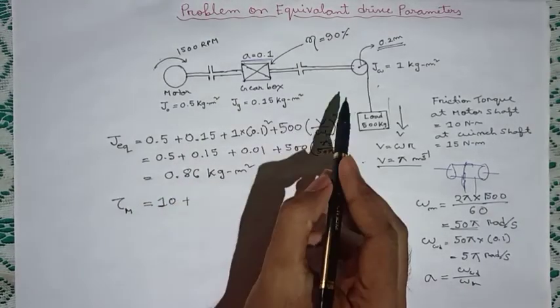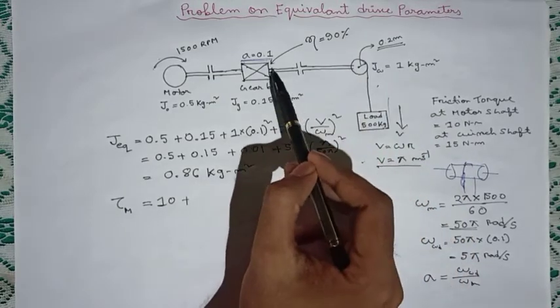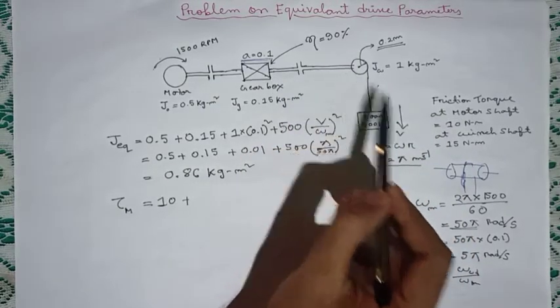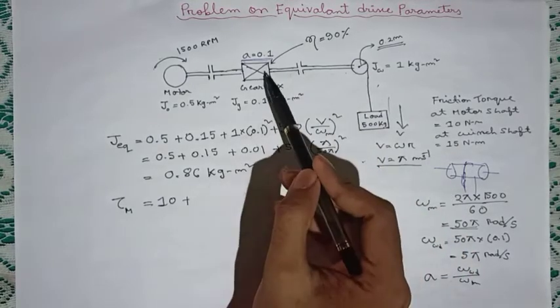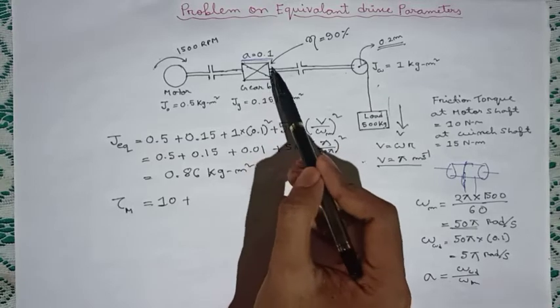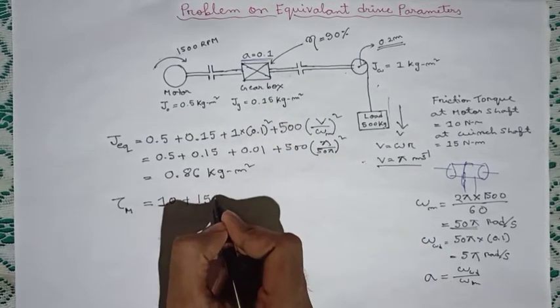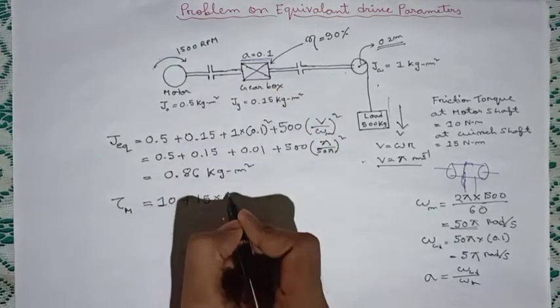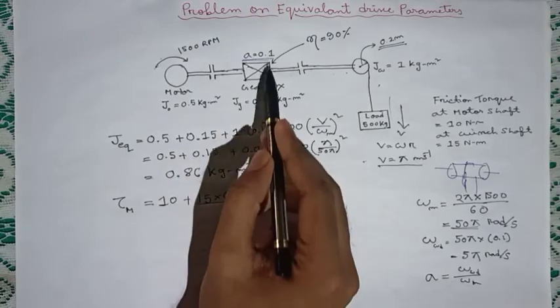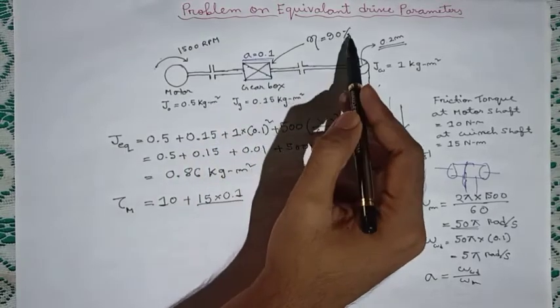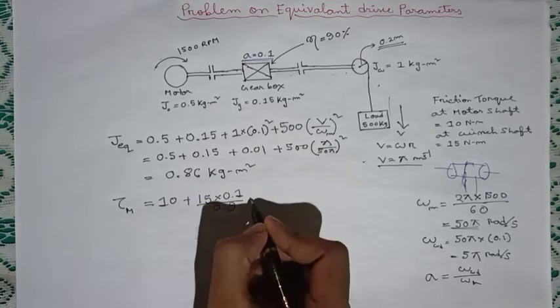Now the friction torque at the wind shaft, that is here, it is given as 15, but we cannot directly write it here. It is because this is connected through a gear. So we have to write 15 into the gear ratio, that is 0.1, and the efficiency of this gearbox is 90%, that is 0.9. I have explained all this in my previous video.